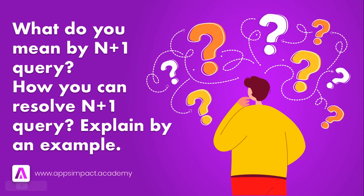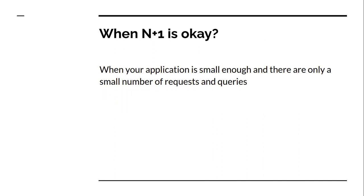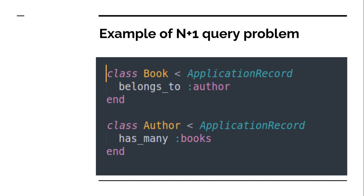The N+1 query problem is one of the common performance anti-patterns in ORM. It happens when a query is executed on each result of the previous query — in other words, when an application gets data from the database and then loops through the results. N+1 queries can be okay when your application is very small with few resources, but if you want to keep your application scalable, you have to eliminate the N+1 query.